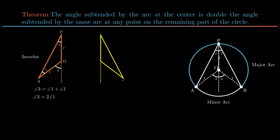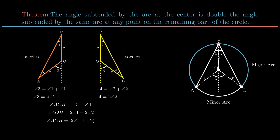Similarly, in isosceles triangle BOP, angle 4 can be written as twice of angle 2. As angle AOB is the sum of angle 3 and angle 4, on adding we get angle AOB as twice of angle APB. Hence the theorem is proved.